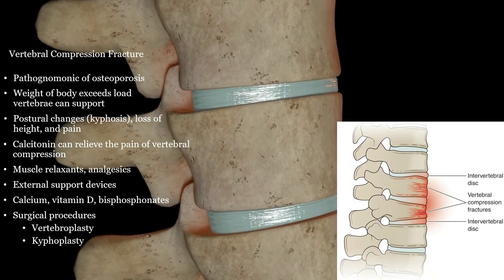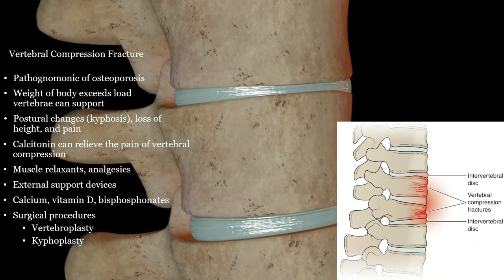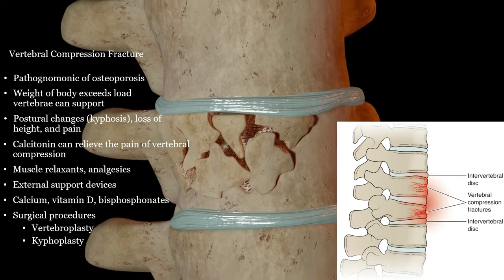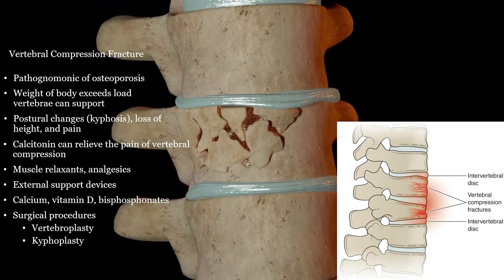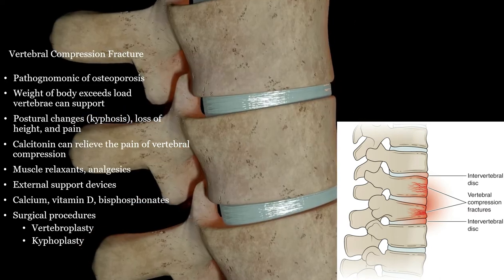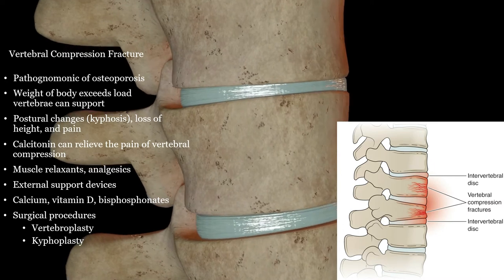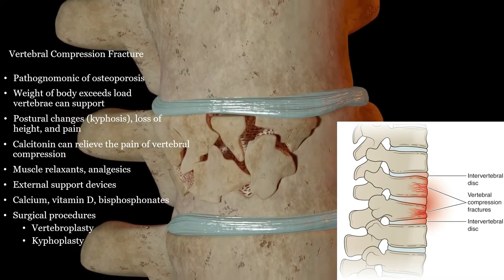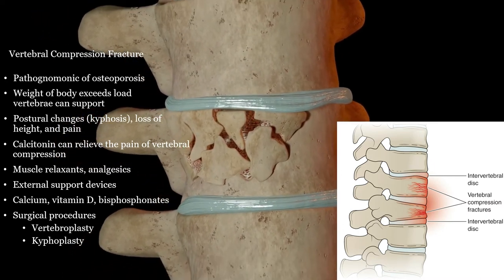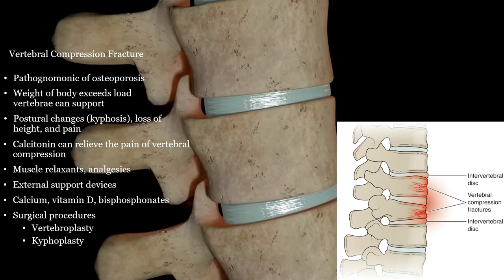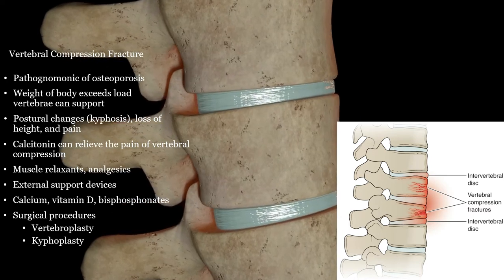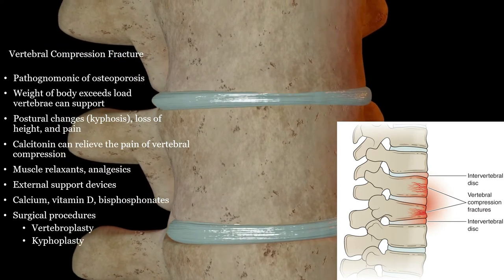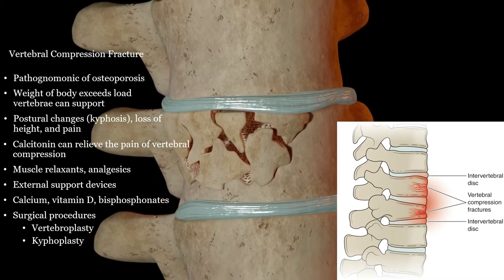Vertebral compression fractures happen in older people with osteoporosis. They are very painful, and one compression fracture can cause another. Treatment is usually kyphoplasty if a new fracture to strengthen the area, but this too can cause a new compression fracture above or below it if there is weakness in adjacent vertebrae. This is why osteoporosis must be treated aggressively.